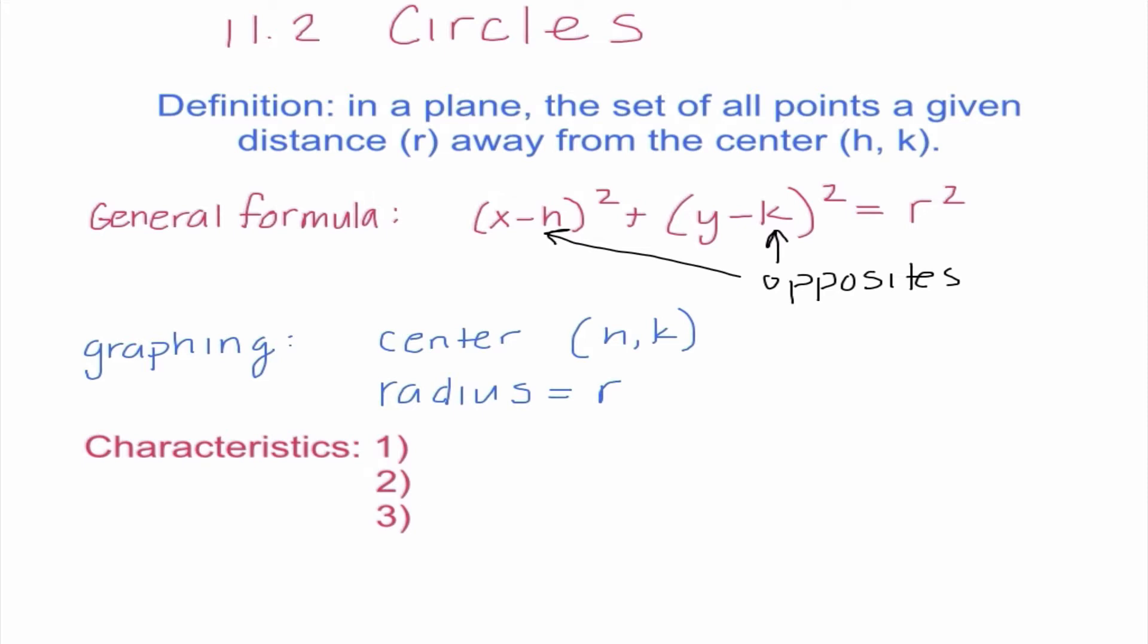And we should be used to this whole h,k stuff from when we did parabolas last semester. Second thing I need to see is the radius. The radius is r, which if we look, the equation is equal to r squared. So what I'm really doing is square rooting r squared. So if I had 9 over here, my radius would be 3. And I'm going to mention something right away, because some of you are thinking, well, if I use an even index number, we should put plus or minus. However, we know that a radius is a distance. Distances can only be positive. So that's why we would only refer to the radius as being a positive value.